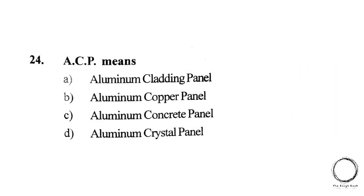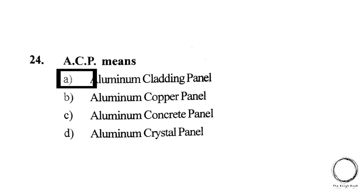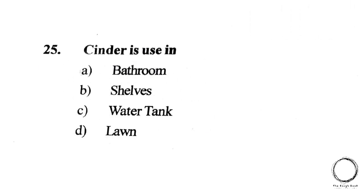Next question: ACP means — A) Aluminium Cladding Panel, B) Aluminium Copper Panel, C) Aluminium Concrete Panel, D) Aluminium Crystal Panel. The answer is A) Aluminium Cladding Panel. Next question: Cinder is used in — A) Bathroom, B) Shelves, C) Water tank, D) Lawn. The answer is A) Bathroom.